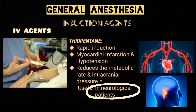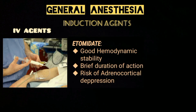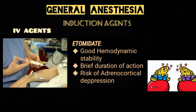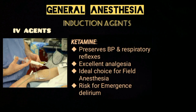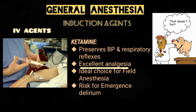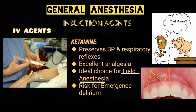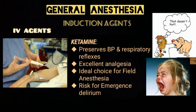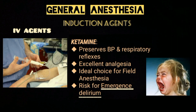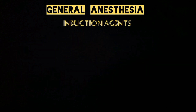Thiopentone also reduces the metabolic rate and intracranial pressure, making it useful in neurological patients. Etomidate provides good hemodynamic stability and has a brief duration of action, but it can cause adrenocortical depression. Ketamine preserves blood pressure and respiratory reflexes and provides excellent analgesia, making it an ideal choice for field anesthesia, though it poses a risk for emergence delirium.